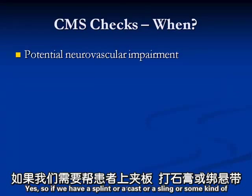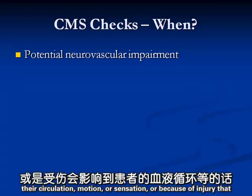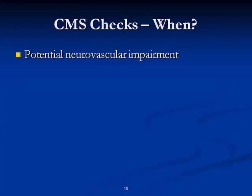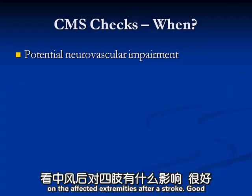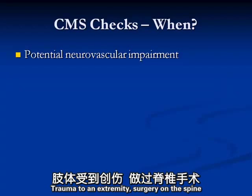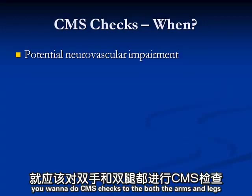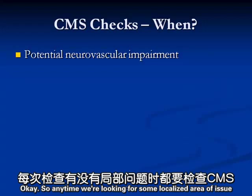If we have a splint, cast, sling, or some kind of procedure that might interfere with a patient's circulation, motion, or sensation - or because of an injury - we want to do CMS checks. After a stroke, you have a specific localized issue, so definitely do CMS checks on the affected extremities. Trauma to an extremity - yes. Surgery on the spine: if upper spine, do CMS checks on both arms and legs; if lower spine, do CMS checks on the legs. Any time we're looking for a localized area of issue.